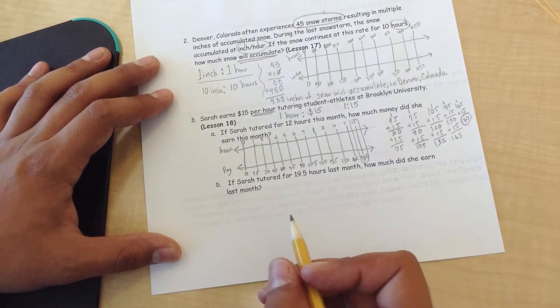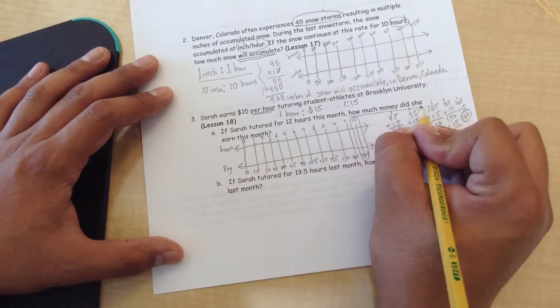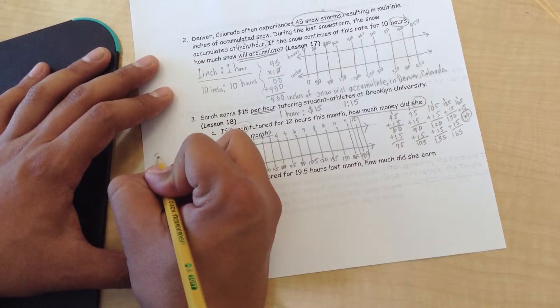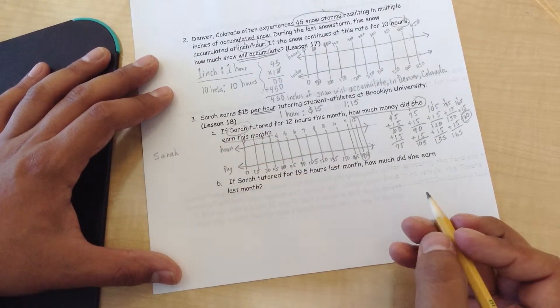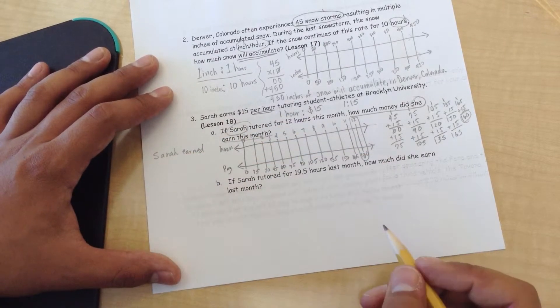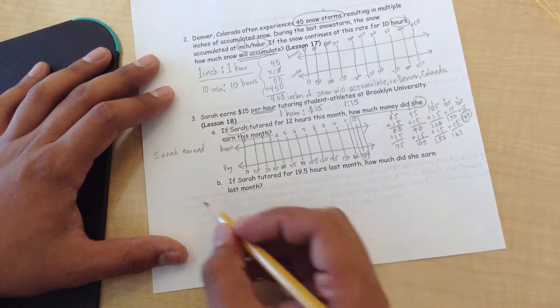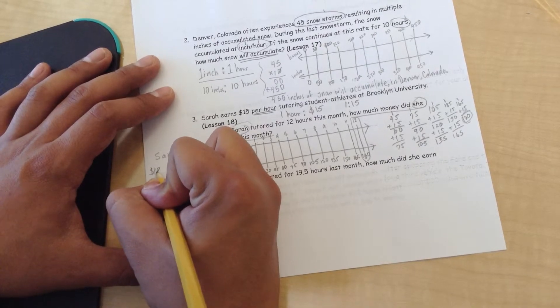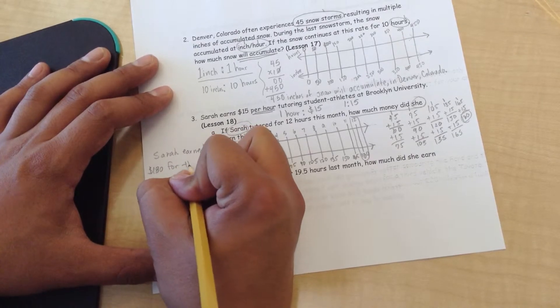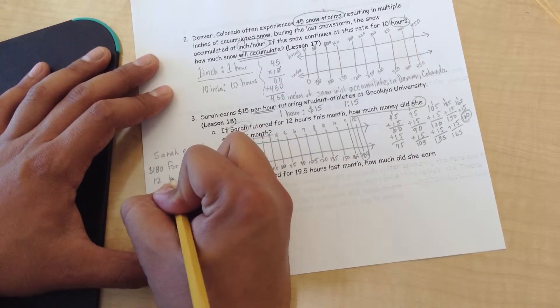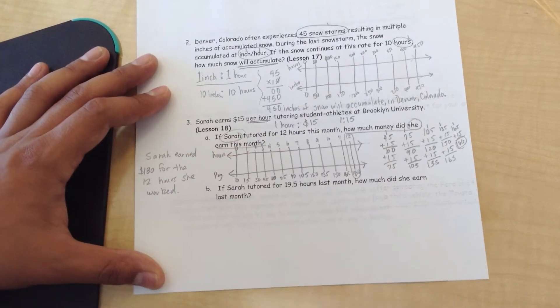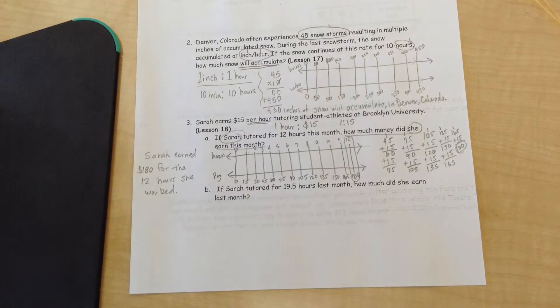Now am I done? No. I have to rewrite that in complete sentence. How much money did she earn this month? And who's she? I can go back and write Sarah. Sarah earned, because it happened in the past, $180 for the 12 hours she worked.